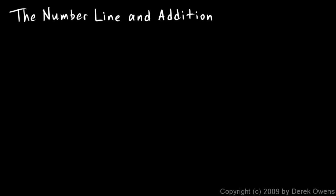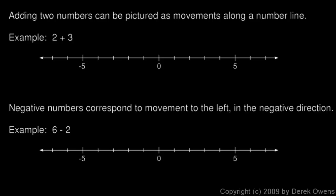Now we'll talk about the number line and addition. It turns out that addition can be pictured visually as movement along a number line. This idea is very simple, but being able to get this visual picture — this mental image of movement along a number line — is important and will be very helpful down the road. Adding two numbers can be pictured as movements along a number line. That's the main idea.